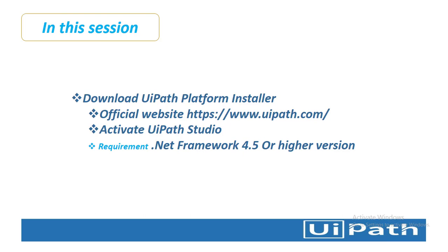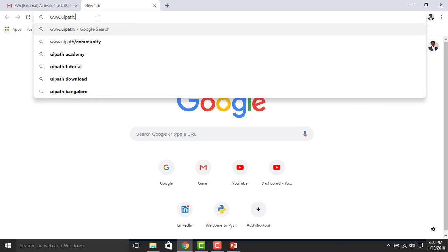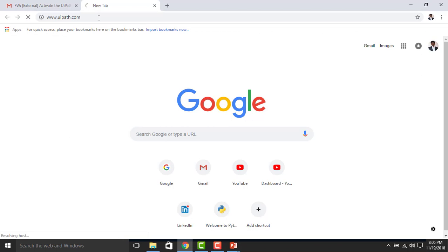To download the UiPath platform installer, please visit the official website at https://www.uipath.com. Now I will show you how to download UiPath from the official website. Let me switch to the browser, type www.uipath.com, and click Enter.